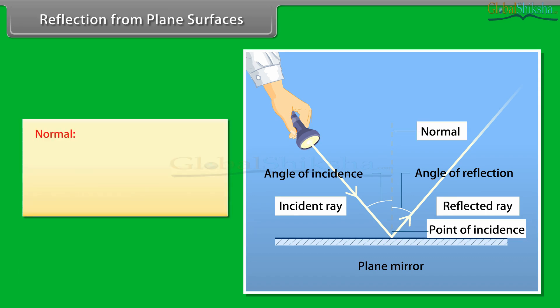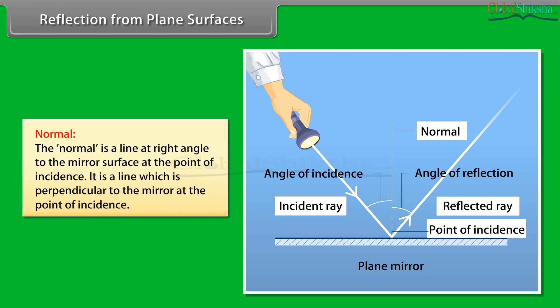Normal: The normal is a line at right angle to the mirror surface at the point of incidence. It is a line which is perpendicular to the mirror at the point of incidence.